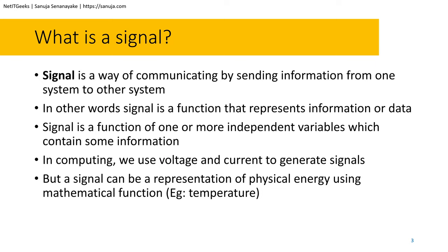First thing first, we need to know what a signal is. A signal is a way of communicating by sending information from one system to another system. In other words, a signal allows us to communicate information generated from one system to another. We have an output signal sent by one communication system, and the input of the next system uses that signal data to process information. Signal is a function of one or more independent variables which contain some information or data.